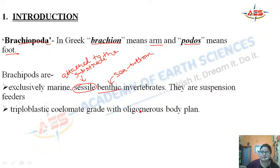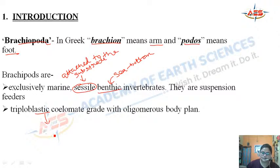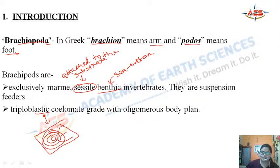Triploblastic means the body is made up of three layers: ectoderm, mesoderm, and endoderm. Coelomate means the body has a well-defined body cavity. Oligomerous means the body is well segmented with well-defined organs within each segment.